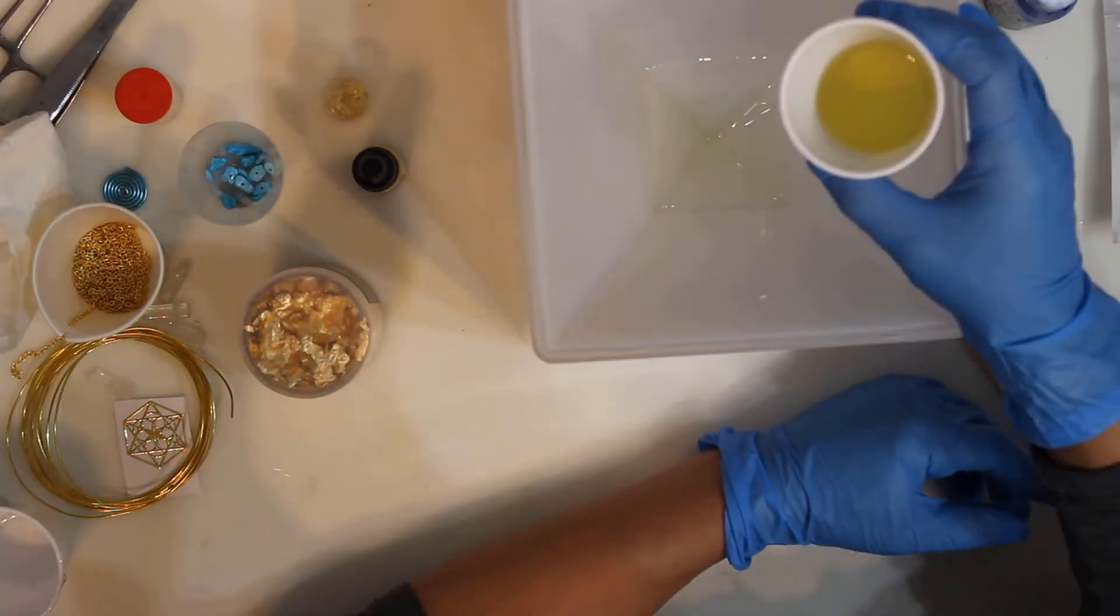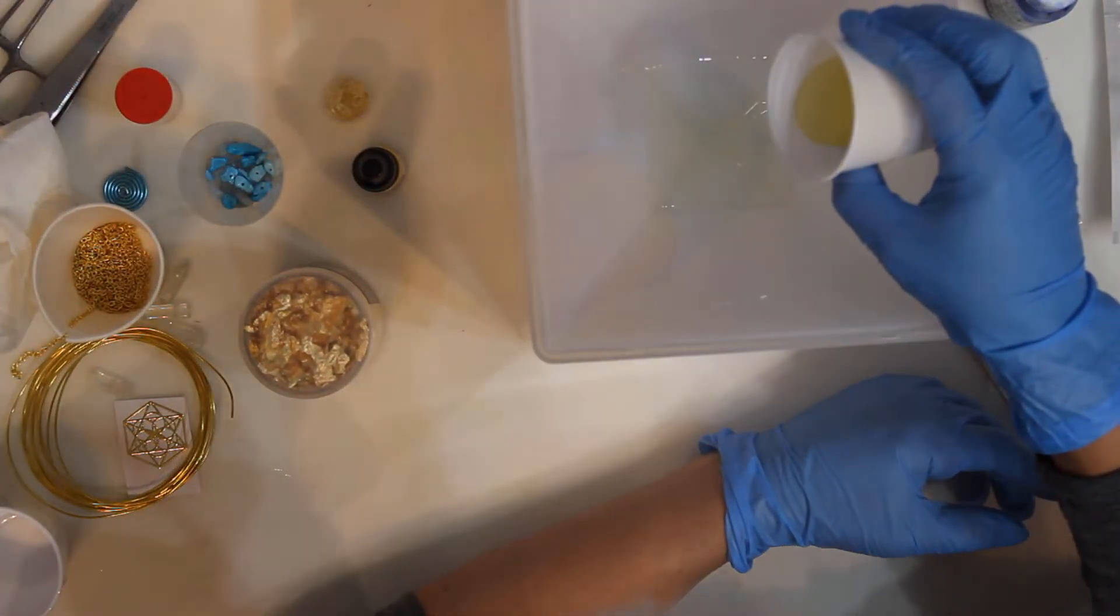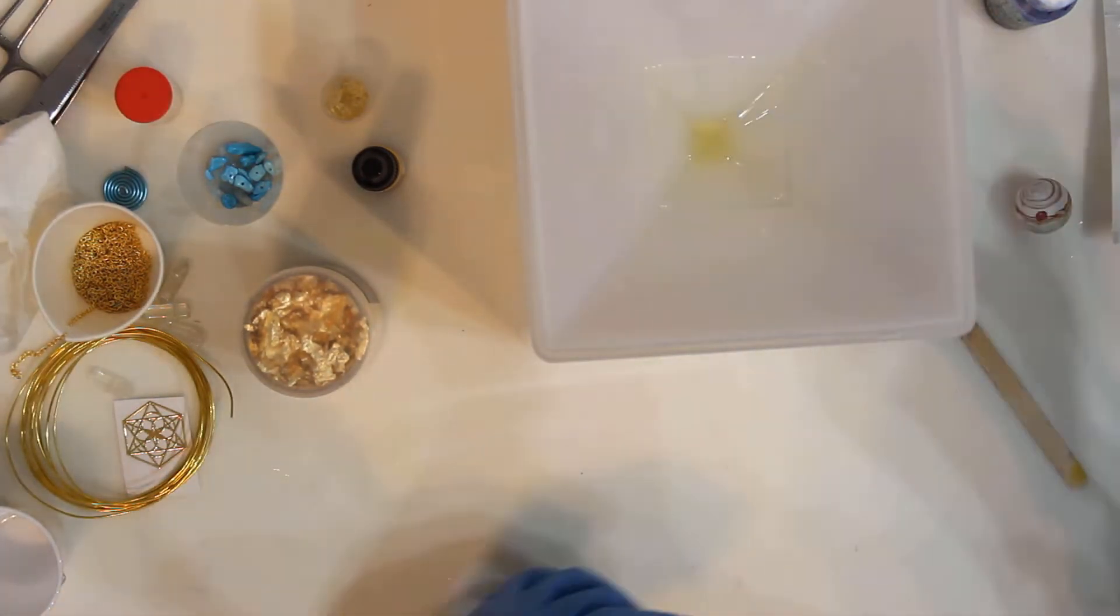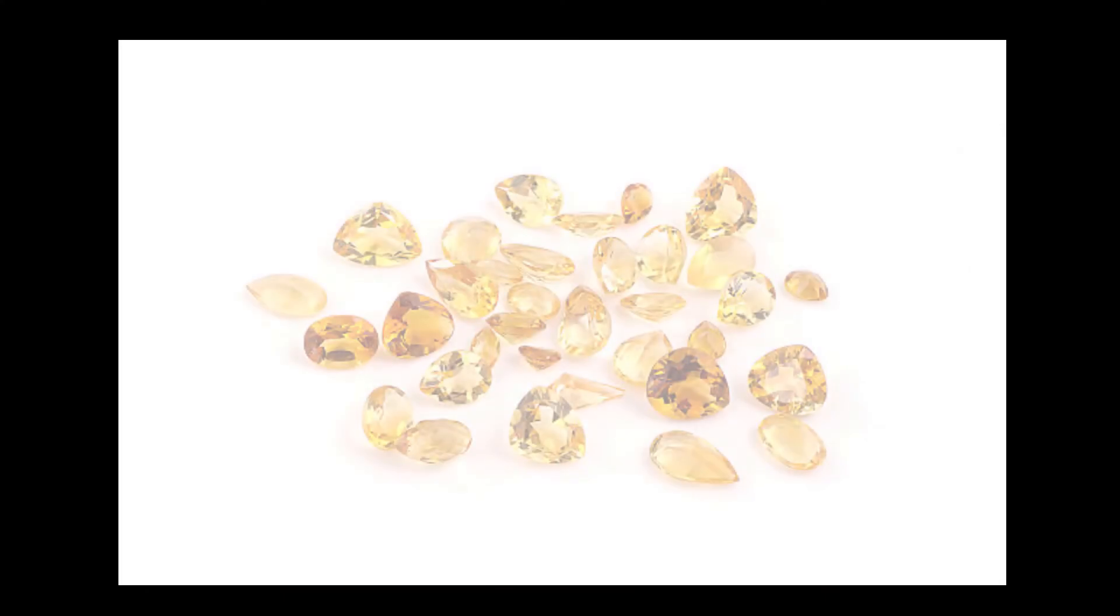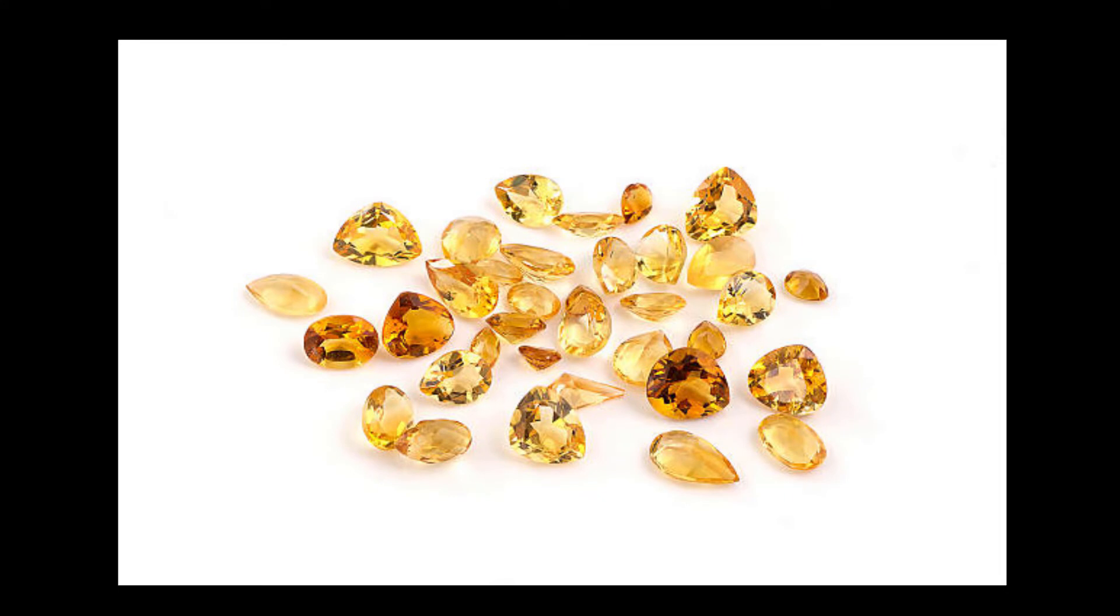In the apex I will pour darker yellow resin and place citrine. This beautiful crystal will do so many things for this organite and for you.